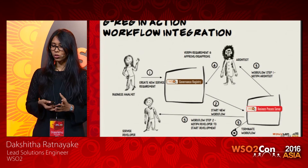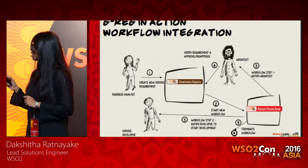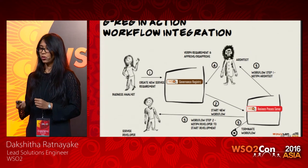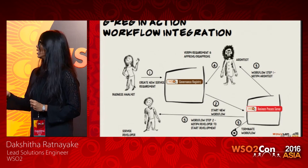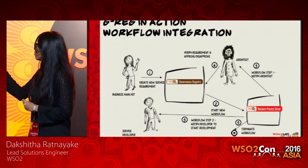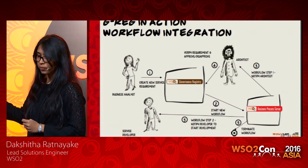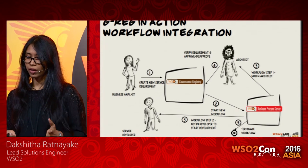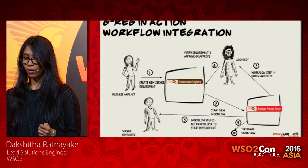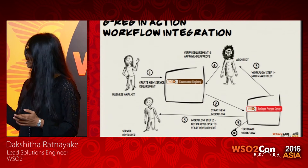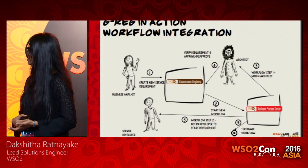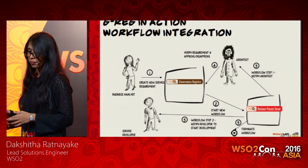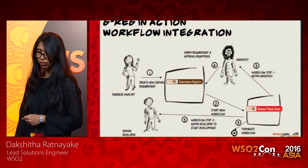A business analyst wants to create a new service requirement — an asset type in the governance registry. The governance registry, through a lifecycle executor, starts a new workflow by calling the REST APIs of the Business Process Server and creating a workflow in the BPS. As the first step, the BPS notifies the architect, who verifies the requirement and approves or disapproves. If approved, the second step notifies the developer to start development. If the status was disapproved, the Business Process Server terminates the workflow.